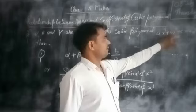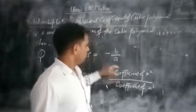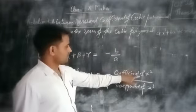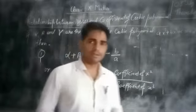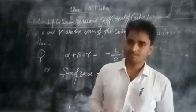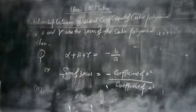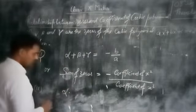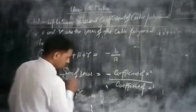The coefficient of x squared is B and the coefficient of x cubed is A. So we can write it in this form — B is the coefficient of x squared and A is the coefficient of x cubed. This is the first relationship between the zeros and the coefficients of a cubic polynomial.